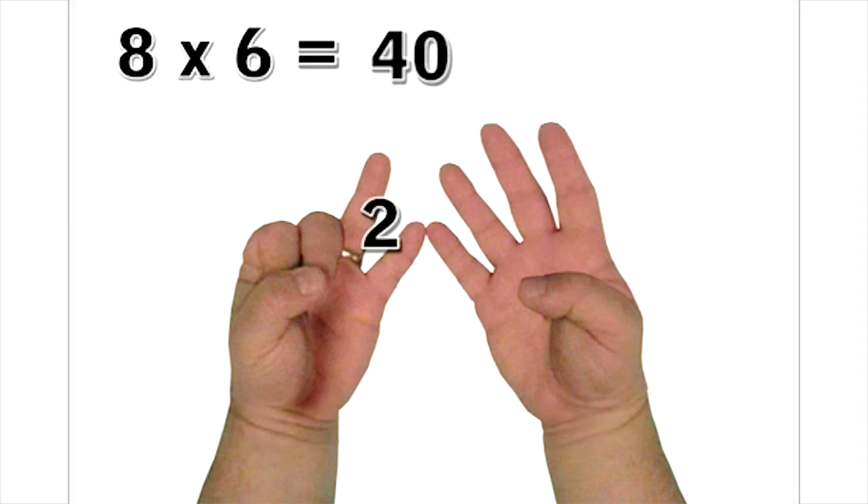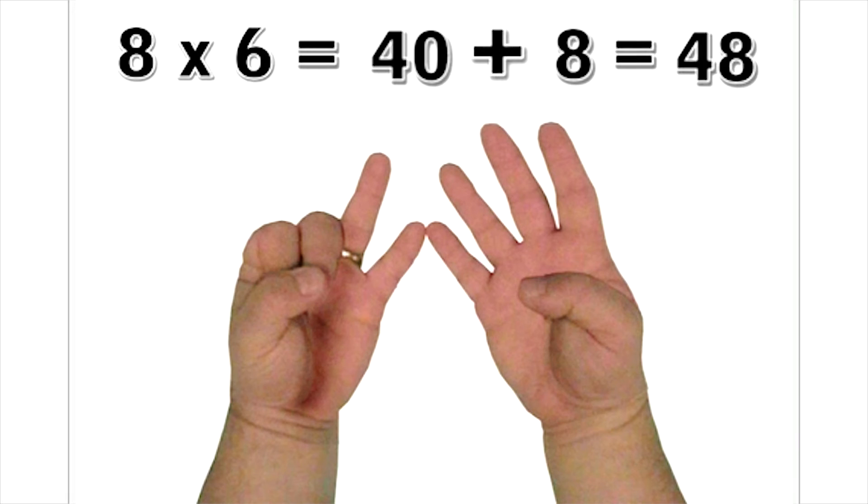On the left hand, we have 2 fingers standing. On the right, we have 4 standing. So that's 2 times 4, which is 8. So our result this time is 40 plus 8, or 48, which again, is the correct answer.